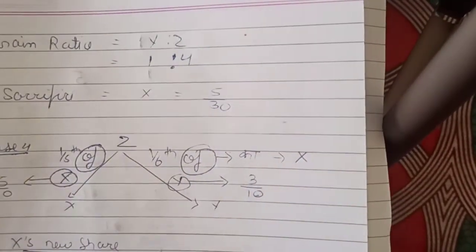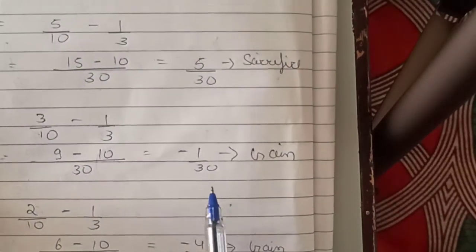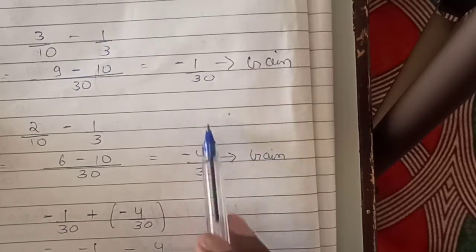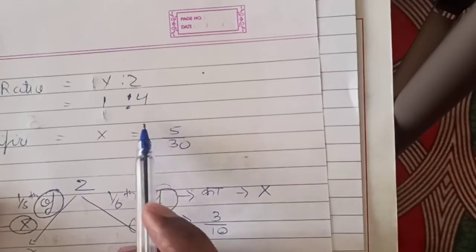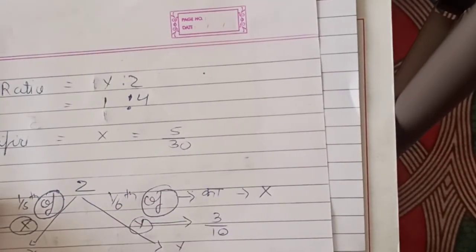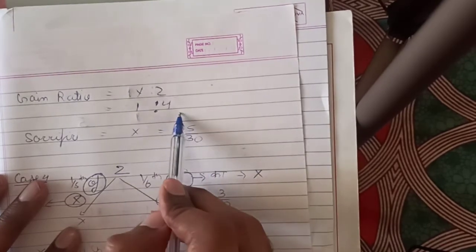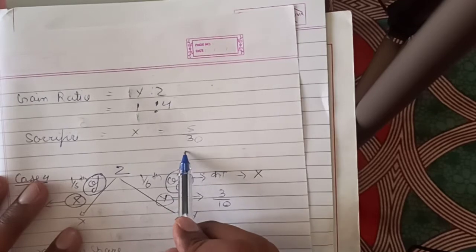Now we write the gaining ratio and sacrificing ratio. Y gained 1/30 and Z gained 4/30. Both denominators are same, so gaining ratio Y:Z = 1:4. Sacrifice was done by X alone, so it is 5/30.